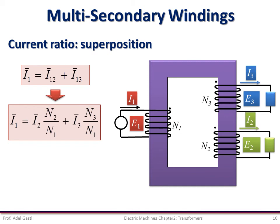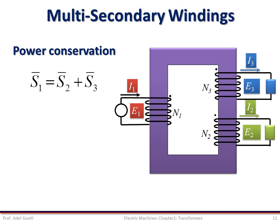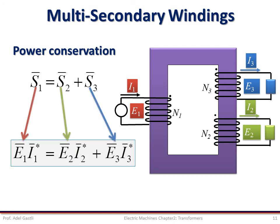We can rearrange this equation by taking N1 from the denominator of the right-hand side and moving it to the left-hand side, multiplying it by I1. Notice that the primary MMF is now equal to the sum of the two secondary MMFs — this is expected and was seen in the previous chapter related to magnetic circuits. Considering the power conservation rule, the input power S1 is transferred to the secondary side and splits between the two windings, generating two output powers S2 and S3, with S1 = S2 + S3. This leads to the equation: E1·I1* = E2·I2* + E3·I3*.